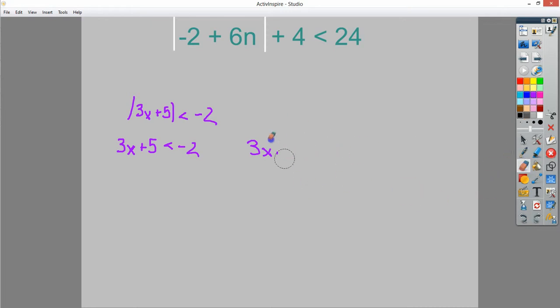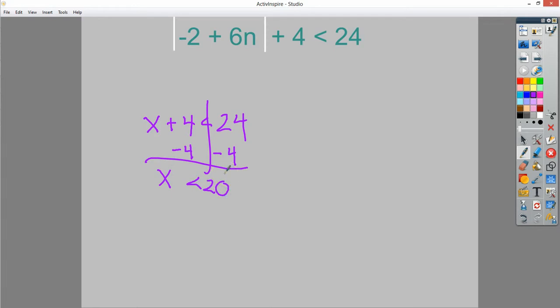Now, in the case that we have now, we've got this extra plus four that we need to deal with, but it's really not that difficult. If I gave you x plus four is less than 24, you would probably just draw a line, maybe subtract four on both sides, and you end up with x is less than 20. What I want you to do in your head is sort of think that I can treat negative two plus six n in the same way, and then I can worry about what to do with it later.